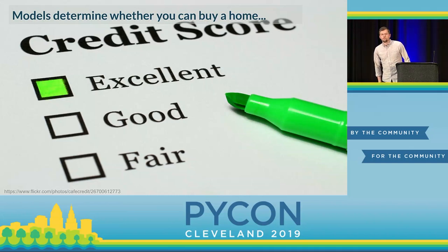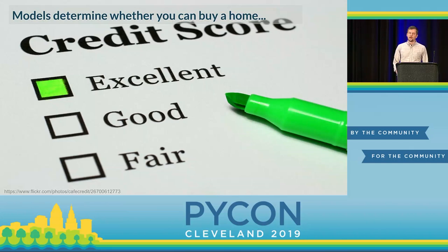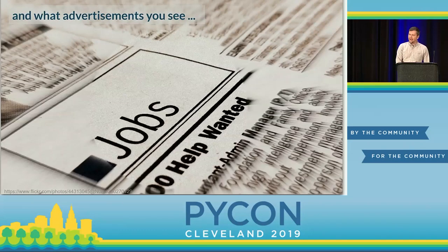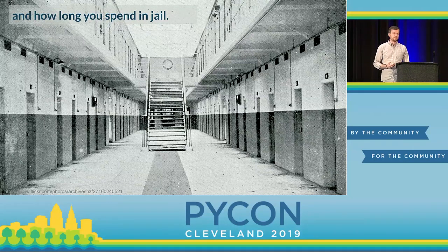At this point, it's pretty commonly accepted that machine learning models can have a big impact on people's lives. Things like credit scoring models can determine whether or not you can buy a home. Advertising models can affect what kind of job offers you're exposed to, what kind of credit products you see. And models can even affect how long you spend in jail. As machine learning models have made their way into these socially impactful domains, a consensus has emerged that it's really important that the predictions of these models are fair.